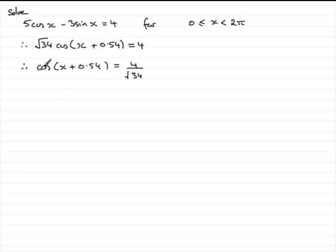Now I need to take the inverse cos of both sides so we then end up with x plus 0.54 equals the inverse cosine of 4 over the square root of 34.